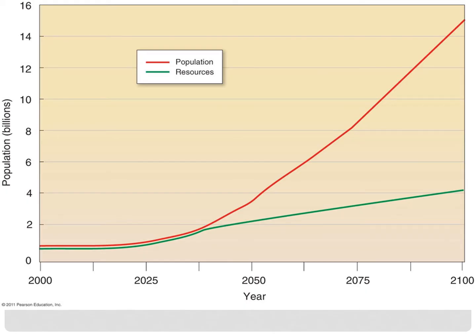In that essay, he argued that population grows geometrically or exponentially — that is, 2 people leads to 4 people, then 8, then 16, then 32, and so on. He also argued that food production could only be increased arithmetically, that is, at a constant rate. So from 2 it becomes 3, 3 becomes 4, on to 5, and so on.